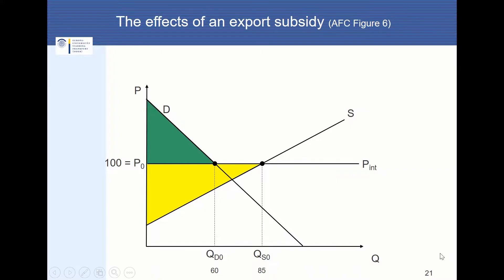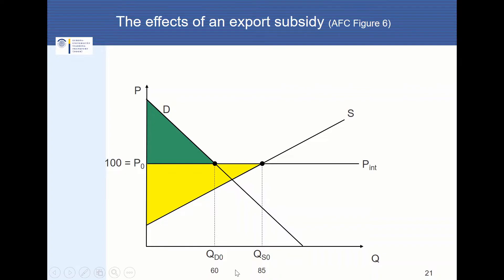In slide number 21 you can see the situation where free trade prevails. The international price is larger than the price in autarky, so we are talking about an exporting nation. The quantity of 60 is demanded, the quantity of 85 is supplied, so production within China is larger than demand within China, and the difference is exported — 25 goods are exported.